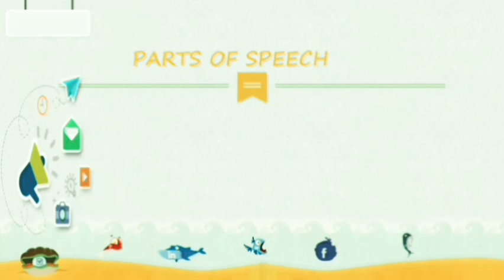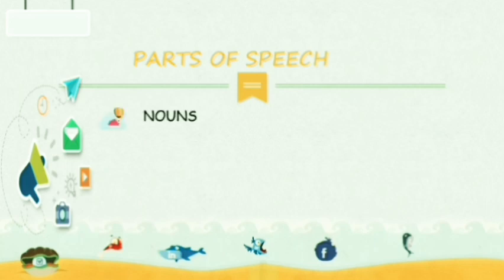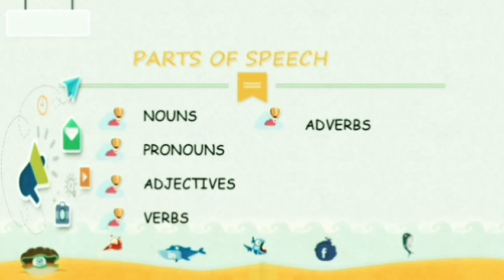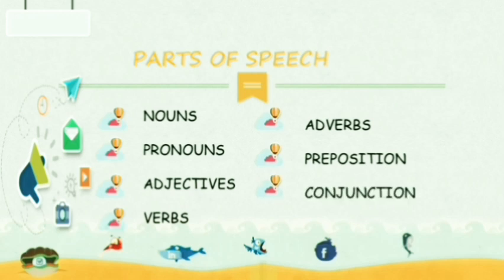First, let us see the parts of speech. Children, do you know how many parts of speech we have? Yes, there are 8 parts of speech. Shall we see one by one? The first one is nouns. The second one is pronouns. The third one is adjectives. The fourth one is verbs. The fifth one is adverbs. The sixth one is prepositions. The seventh one is conjunctions. And the eighth one is interjection.